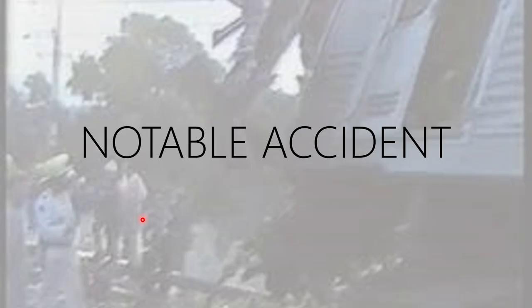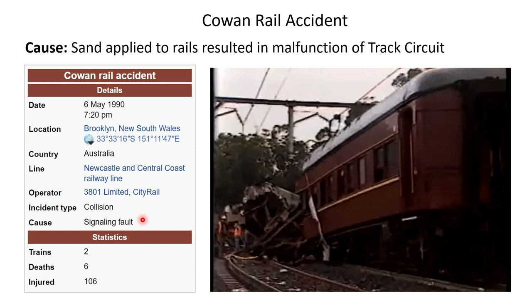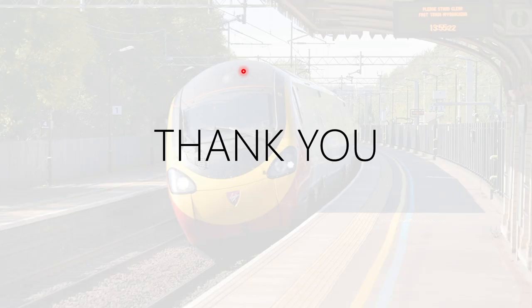Last but not least, there was a rail accident that occurred precisely because of failure of DC track circuits — the Coven Rail Accident. You can look it up on Wikipedia, but basically the cause was that sand was applied to rails. When the wheel went over the track, the wheels could not short the track circuit, so the track circuit still showed vacant and another train was allowed to proceed at full speed. That brings me to the end of this video. Thank you so much, and I hope to see you in the next one.